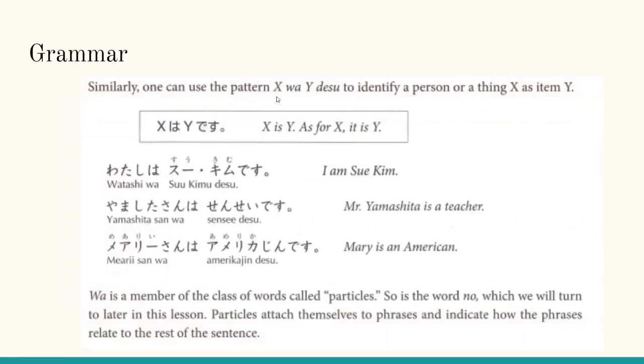Similarly, one can use the pattern X wa Y desu to identify a person or a thing, X, as item Y. X wa Y desu: X is Y, or, as for X, it is Y. Watashi wa Takeshi desu would mean I am Takeshi. Yamashita-san wa sensei desu would mean Mr. Yamashita is a teacher. Mary-san wa amerikajin desu would mean Mary is an American.